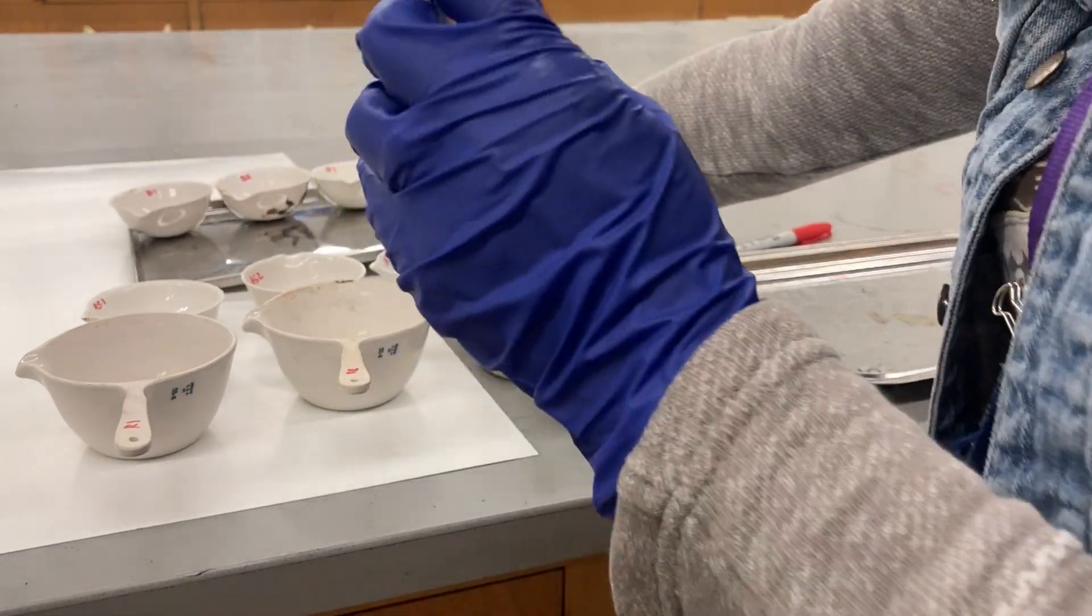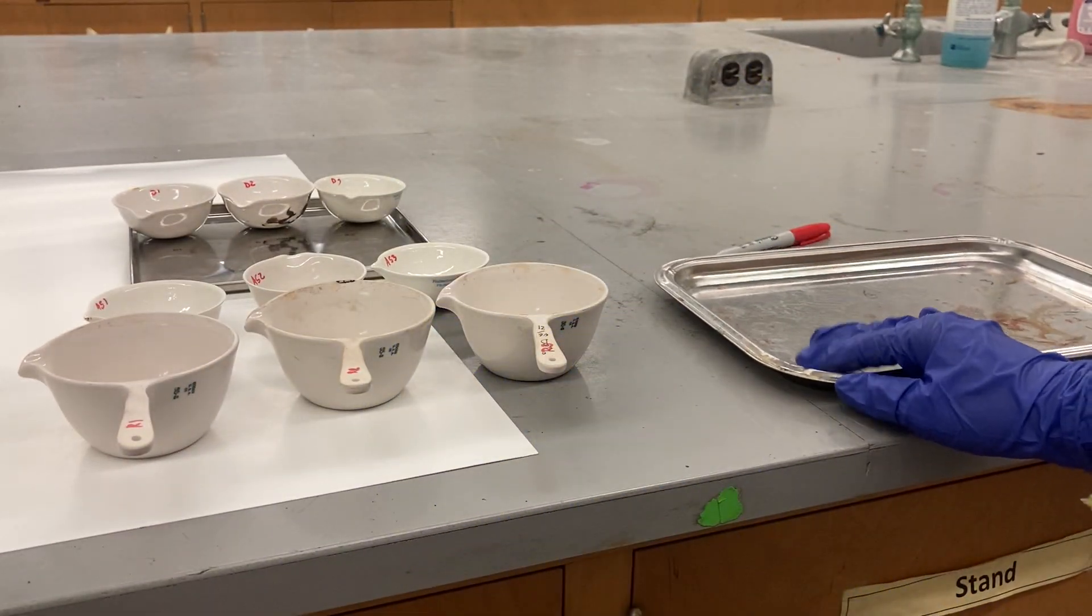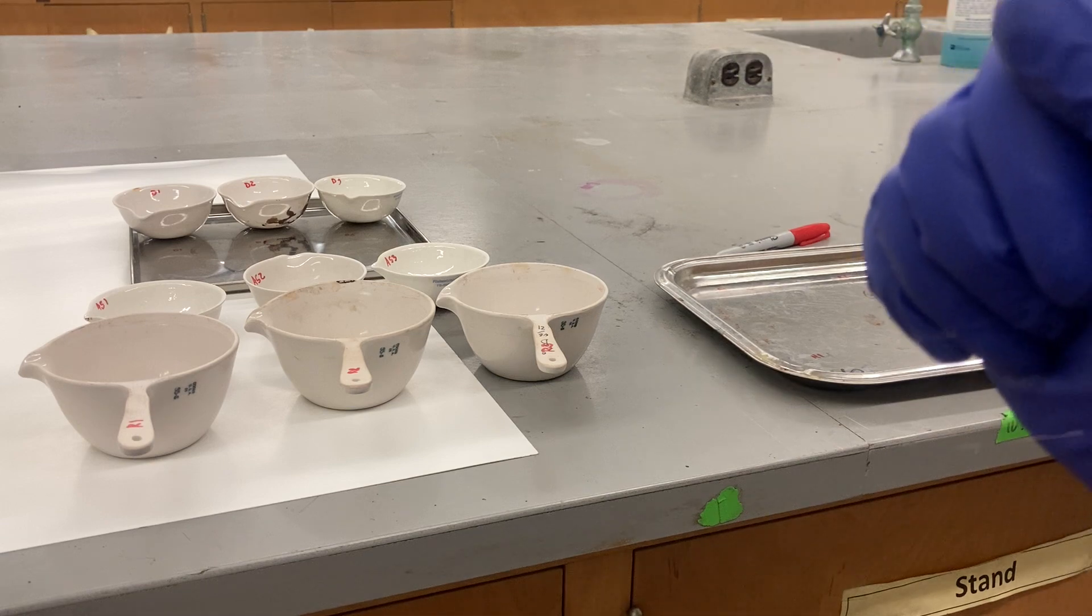Step one is labeling for both evaporation dishes and the tray. Then we're gonna go to the second step.